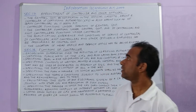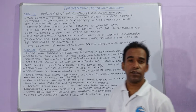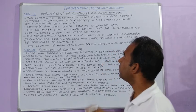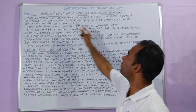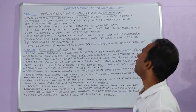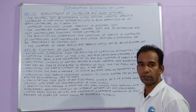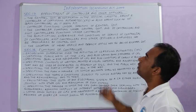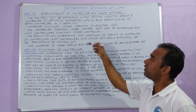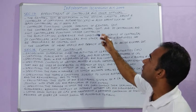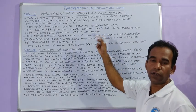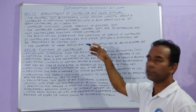So friends, let us start with Section 17. It is the appointment of controller and other officials. Here we will discuss who appoints a controller and its functions.